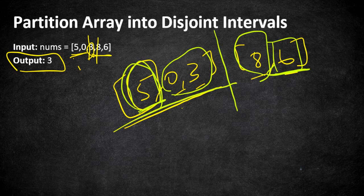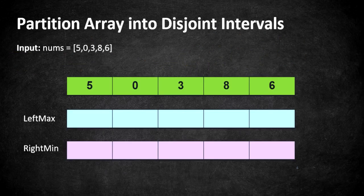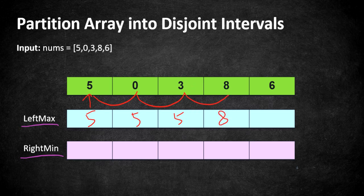To find the partition point, we use two integer arrays: leftMax and rightMin. First, we update leftMax by iterating left to right, storing the running maximum. Starting with 5 as the first element, then comparing 5 and 0 — 5 is greater. Comparing 5 and 3 — 5 is greater. Then 5 and 8 — 8 is the higher element. Comparing 8 and 6 — 8 is still the max. So leftMax stores the maximum element seen so far at each position.